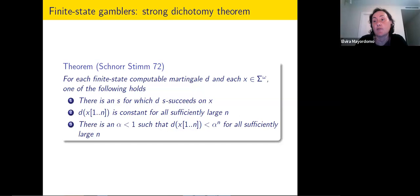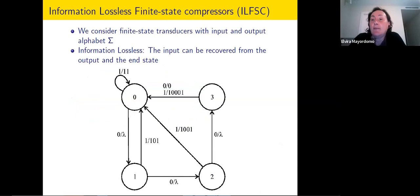This extreme dichotomy is very useful in dealing with finite state gamblers because the possible behaviors are very limited. There is a second possibility for defining finite state dimension: information lossless finite state compressors — just transducers, finite state machines with output. They are required to be information lossless, meaning you can recover your input from both the output and the last state visited.